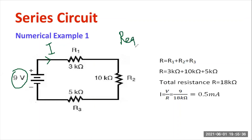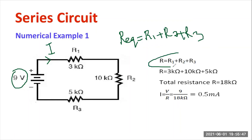How to calculate R equivalent? Since the circuit is in series, R_eq equals R1 plus R2 plus R3. R1 is 3 kΩ, R2 is 10 kΩ, R3 is 5 kΩ. Adding 3 plus 10 plus 5 gives 18 kilohms, which is 18 times 10 to the power 3 ohms.